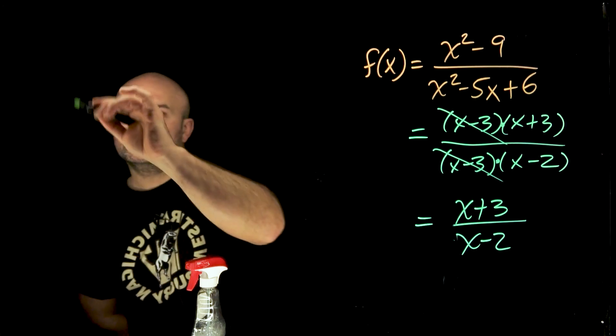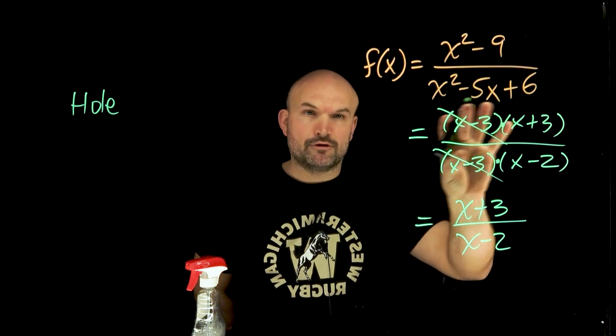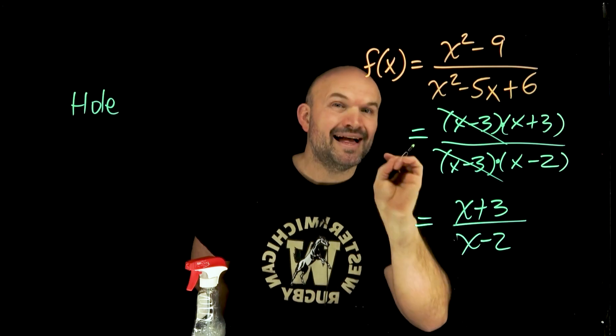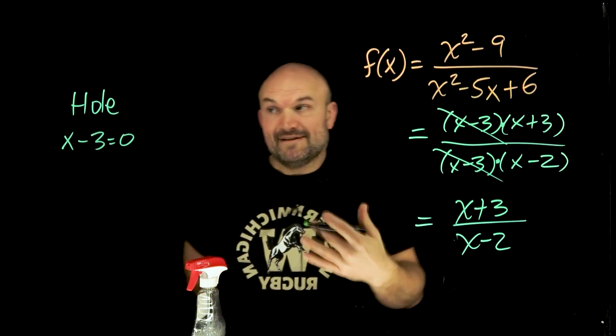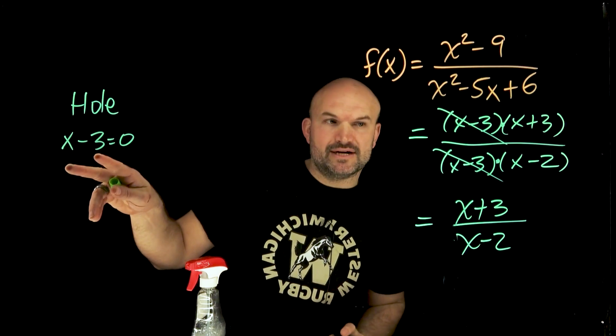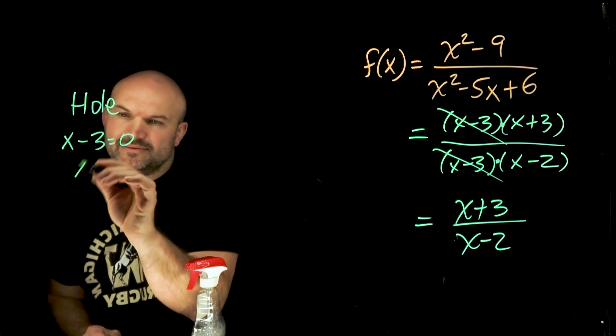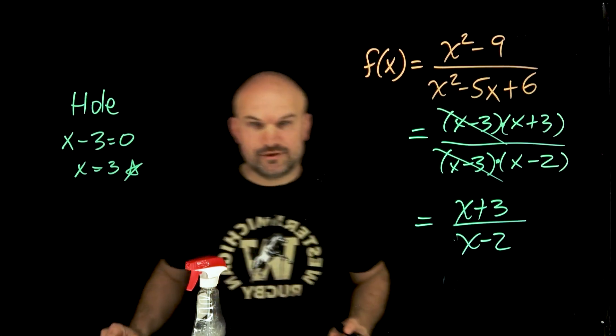So let's go and first identify the hole. Remember the hole is your removable discontinuity. So that is what got removed. Now, what was the expression that got removed? The x minus three. That is what we're going to want to set equal to zero. Now we say, all right, what values make this equal to zero? What value of my expression makes that equal to zero? Well, we can see that's going to be x equals three. So my hole is going to be at x equals three.